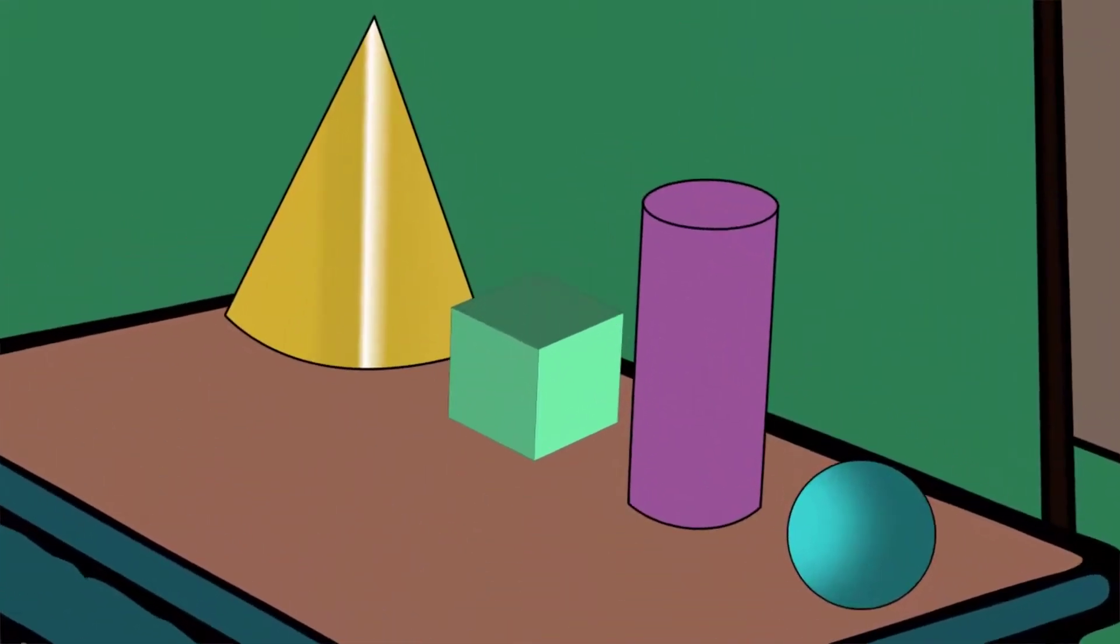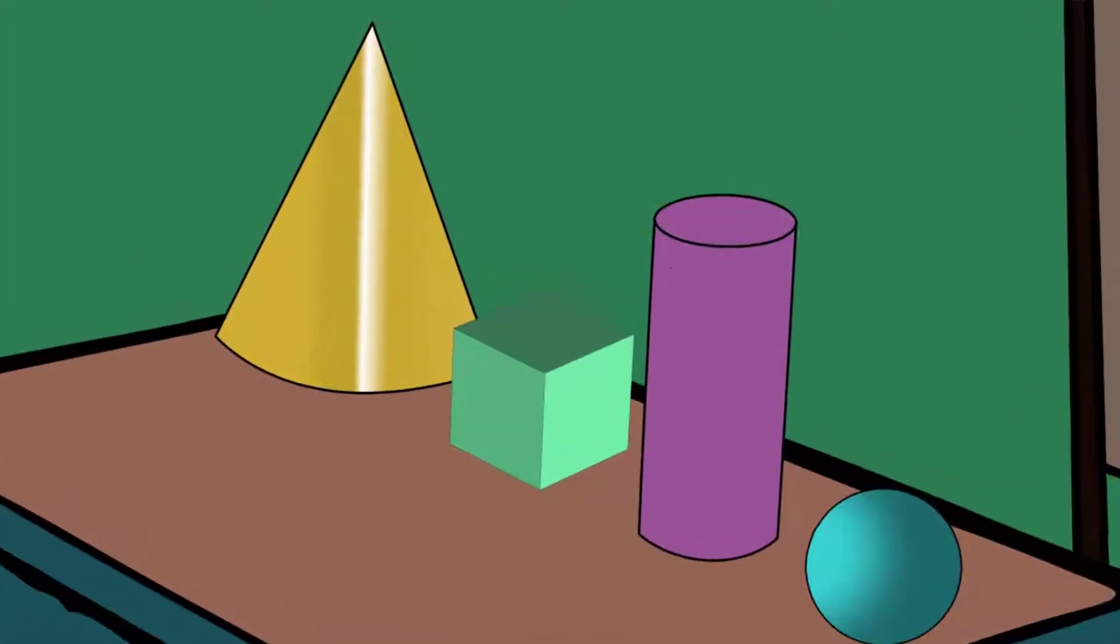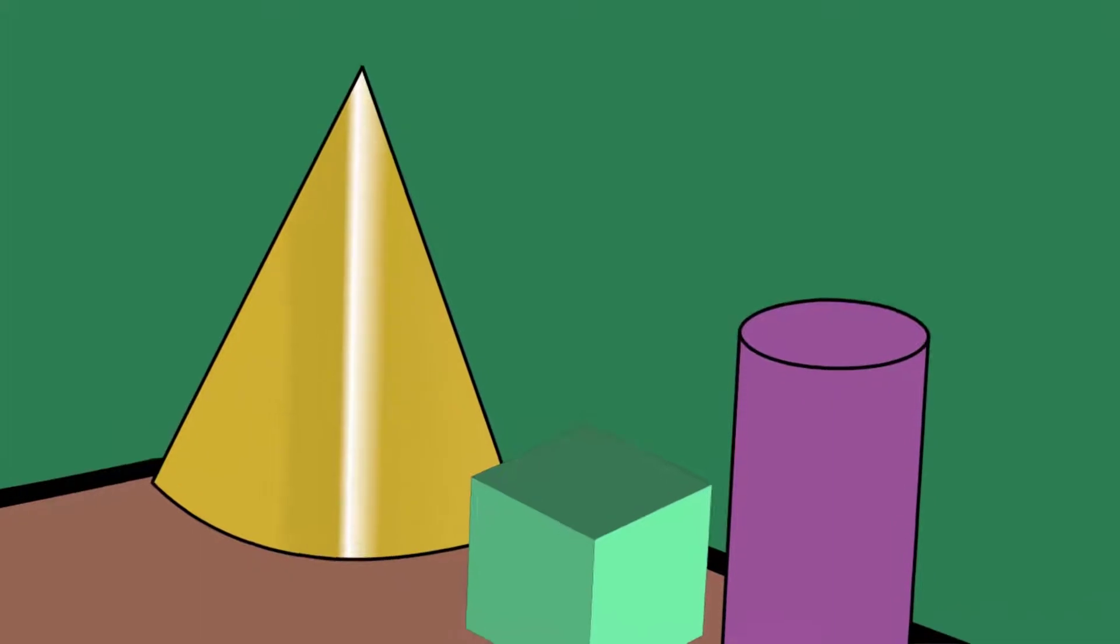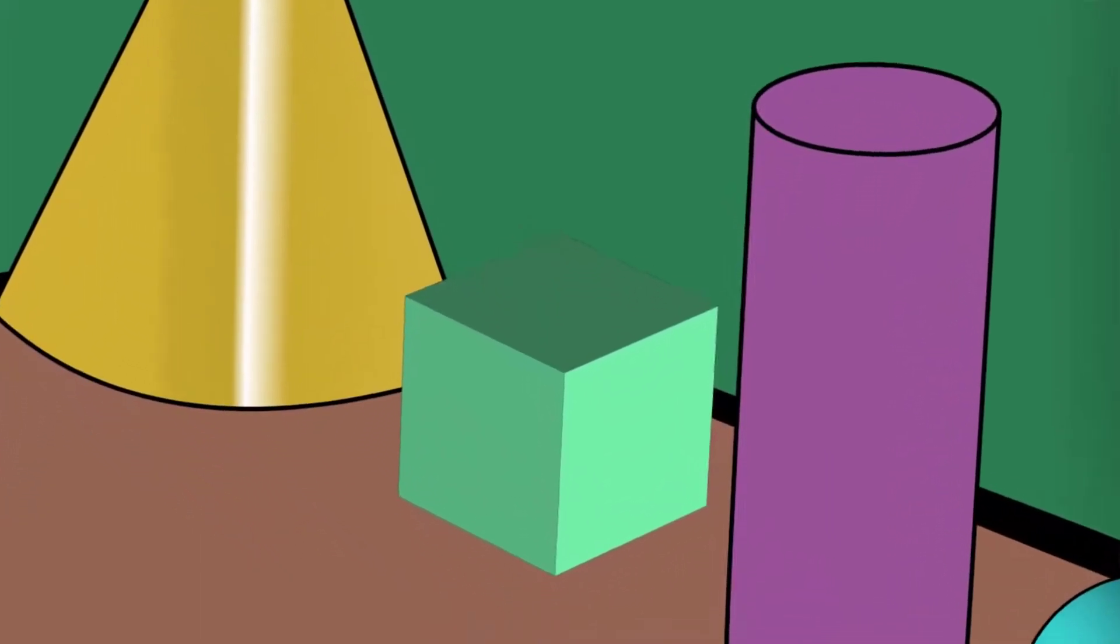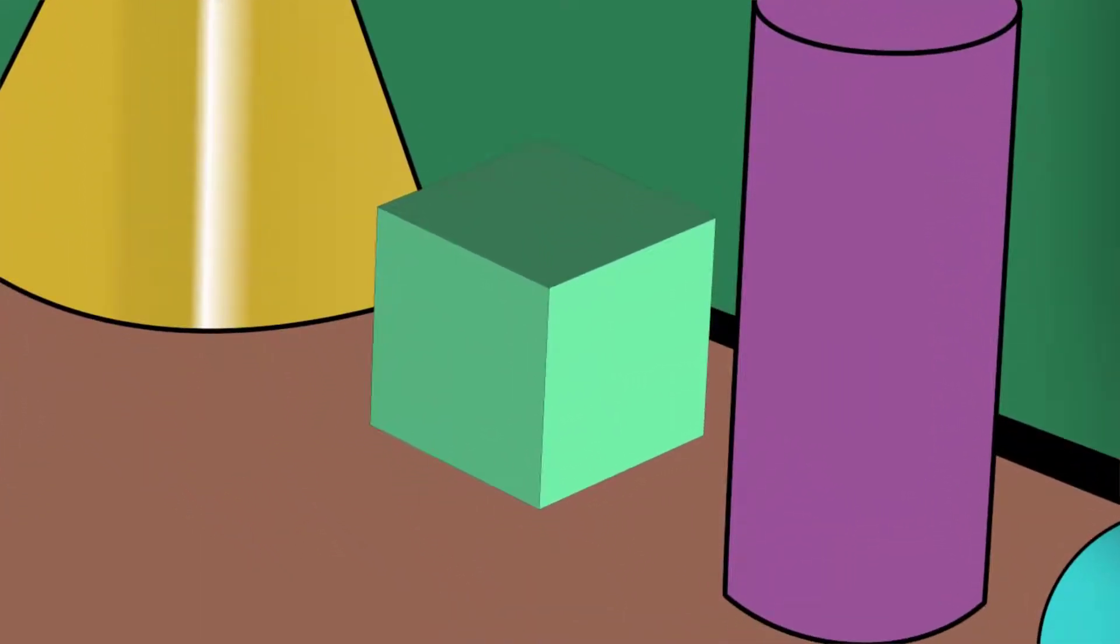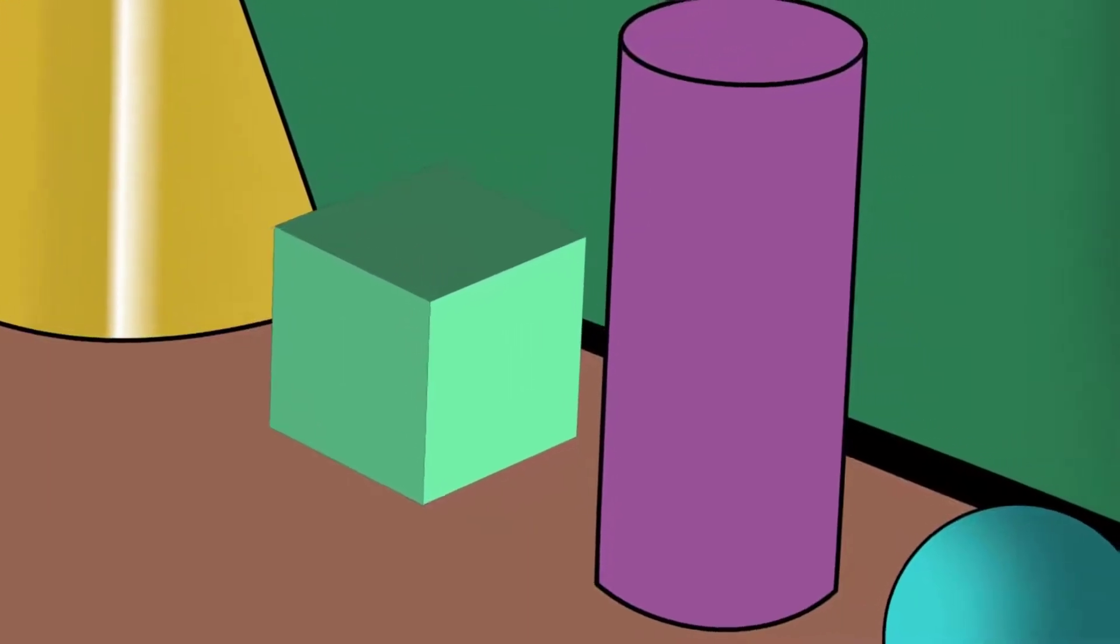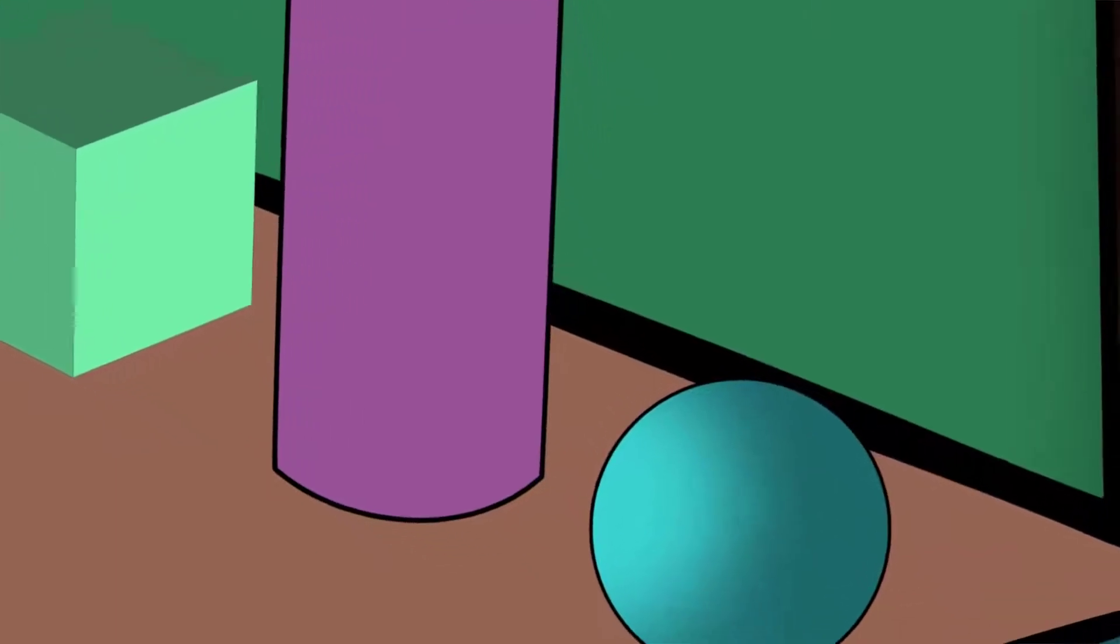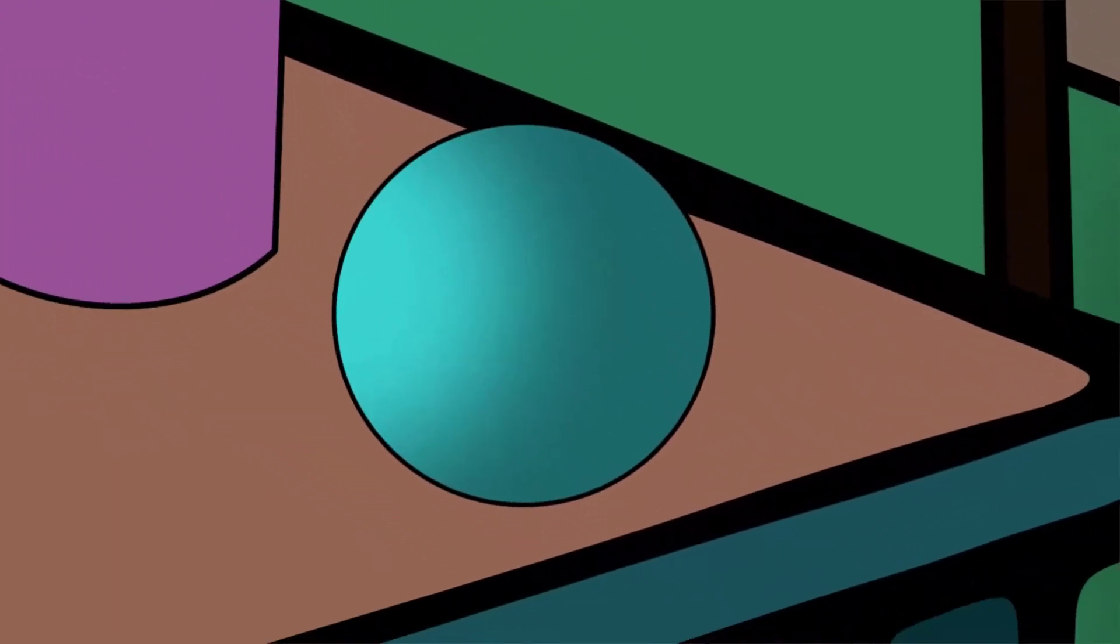My dear sweet friends, see the things on the table. There is a cone on the table. A cube is also there. A cylinder is also kept on the table. A spherical ball is also kept.